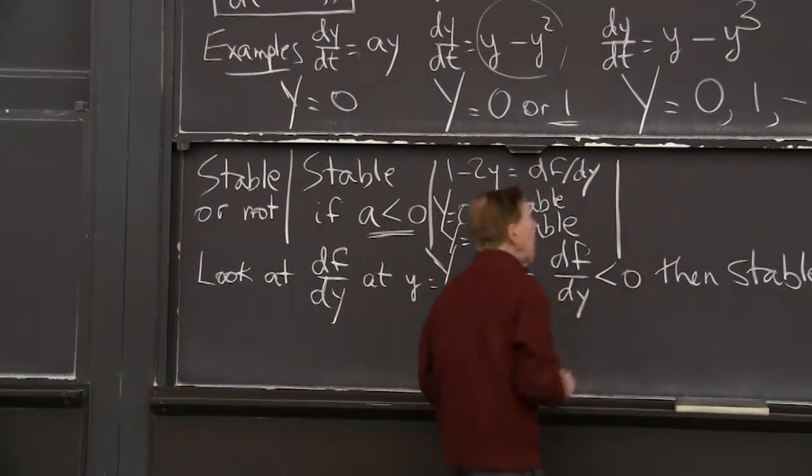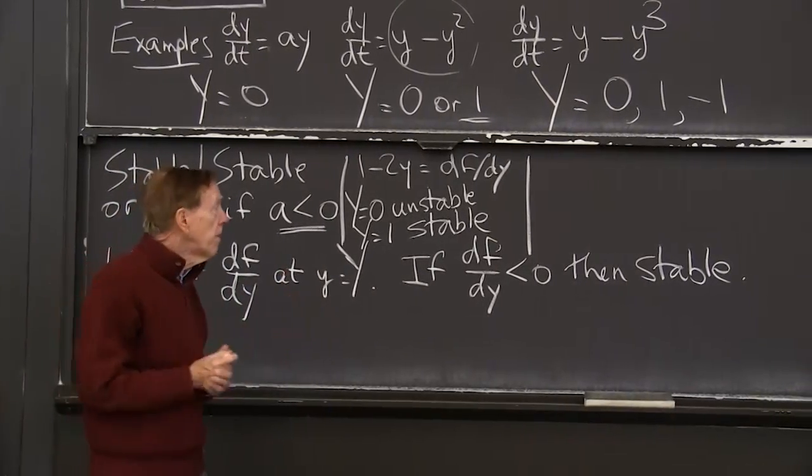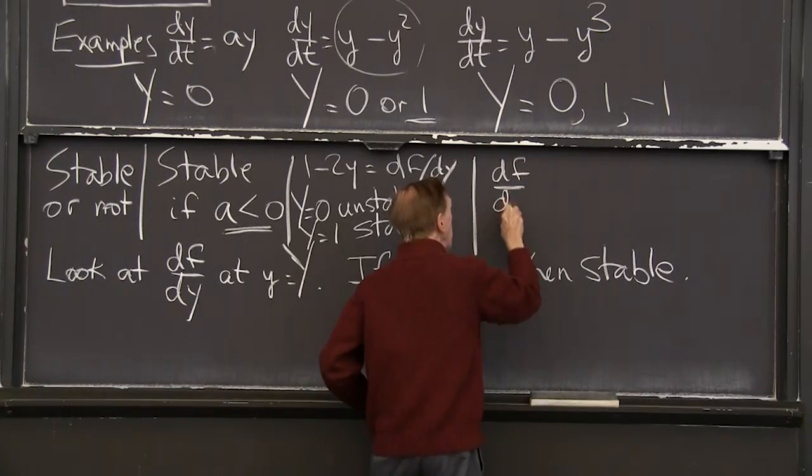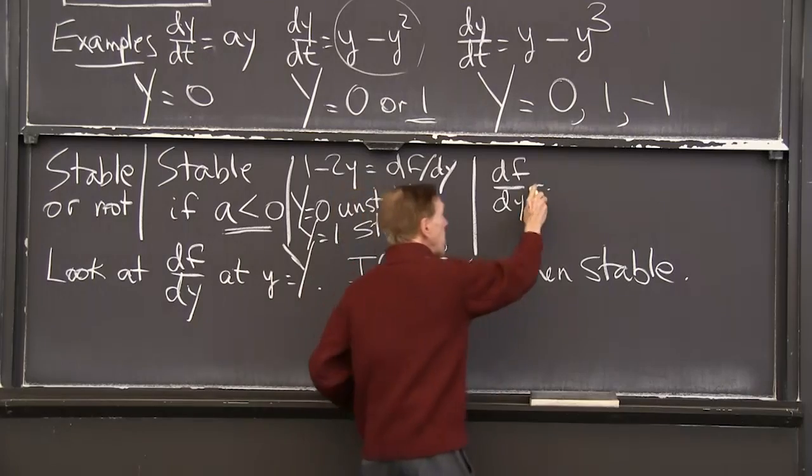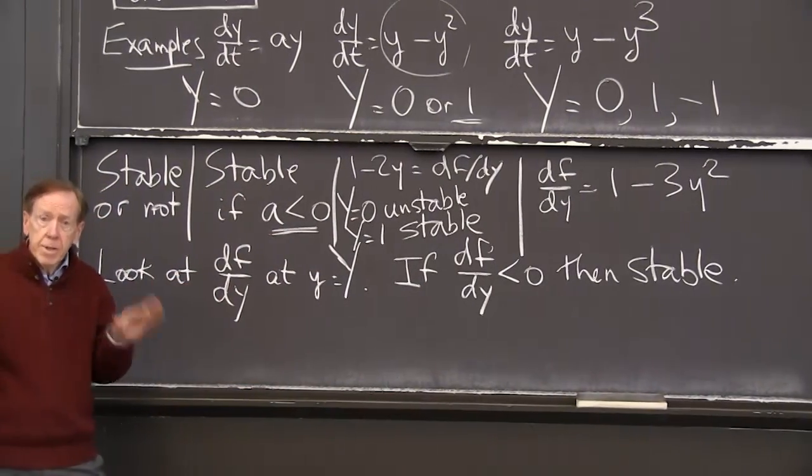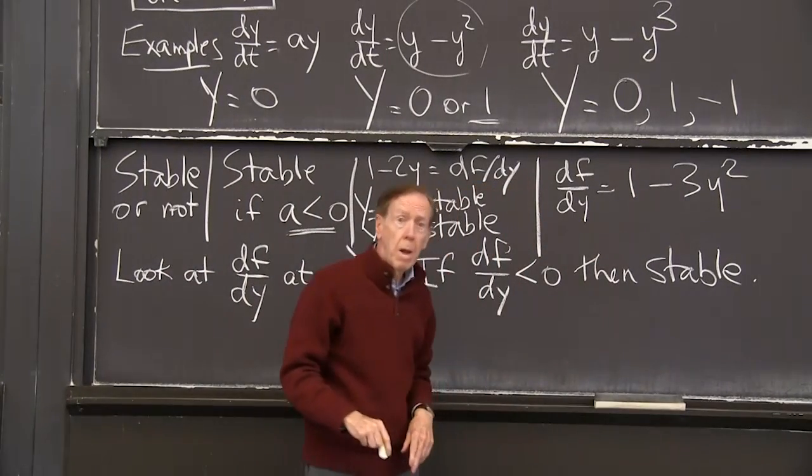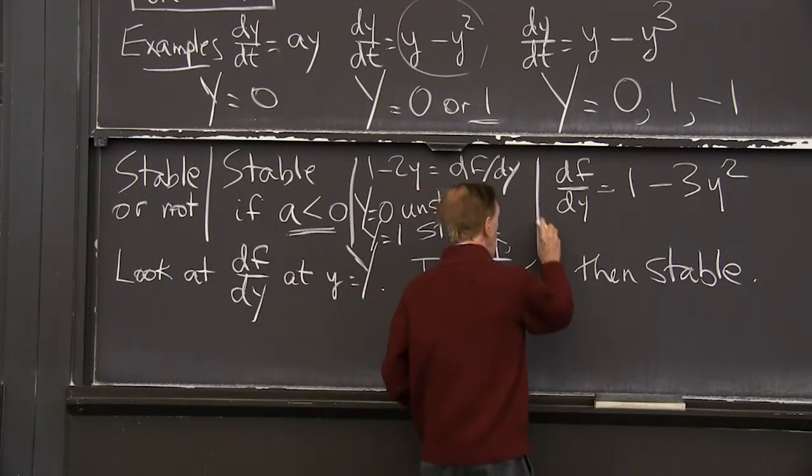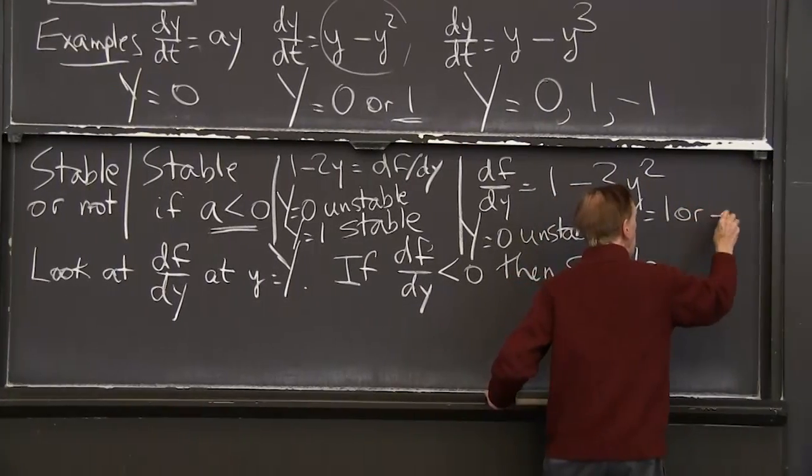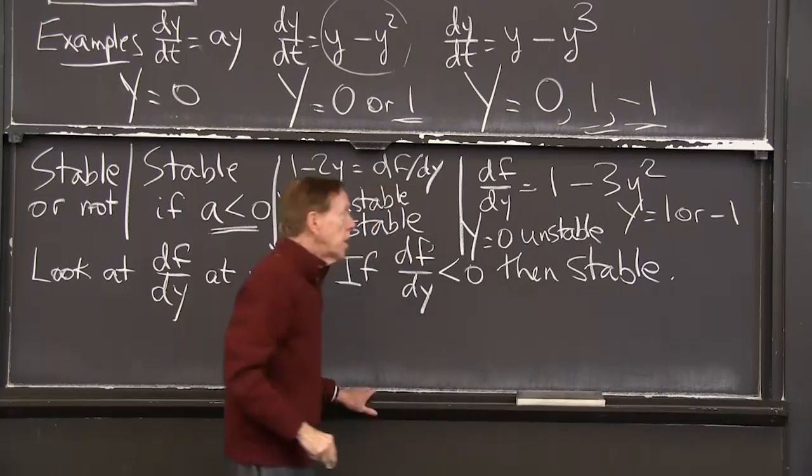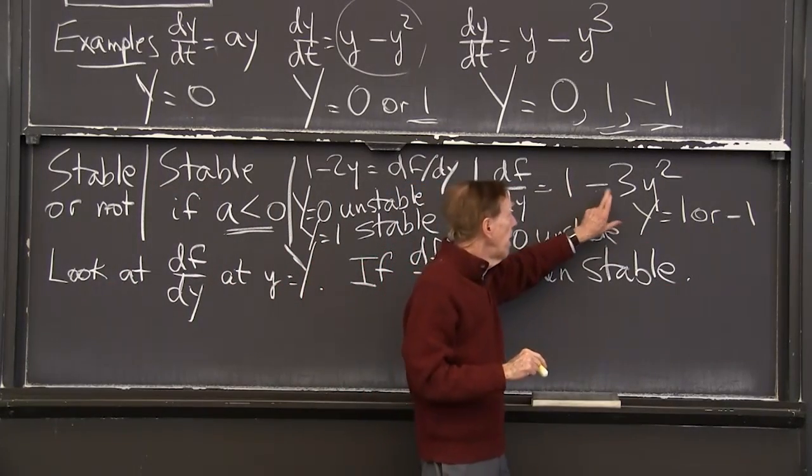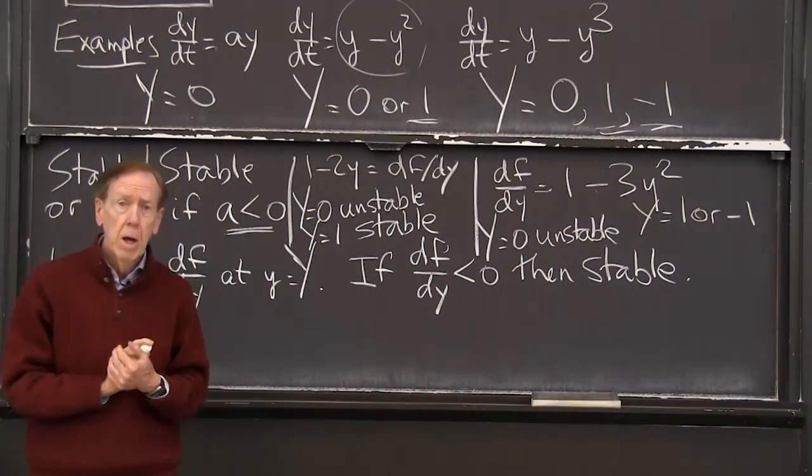And now here we have three steady states. And in other examples, we could have many. Or they might be hard to find. But here we can see exactly what's happening. Now, I look at the derivative, df/dy, it's the derivative of y minus y cubed. So that's 1 minus 3y squared. So again, y equals 0 is bad news. Y equals 0, I get 1, positive number, unstable. So y equals 0, unstable. Whereas y equals 1 or minus 1, those are the other two steady states. Then 1 minus 3y squared, y squared will be 1 in those cases. So I have 1 minus 3 minus 2. It's negative. So those are stable.